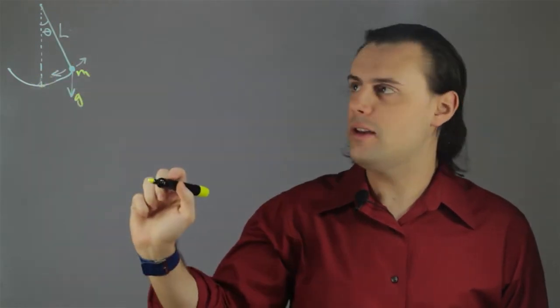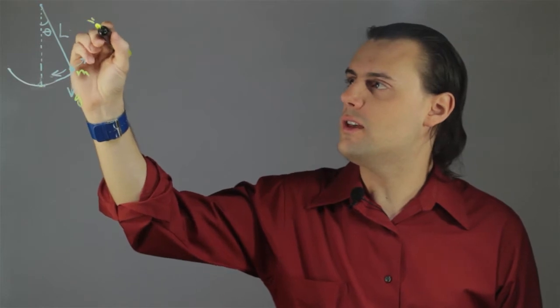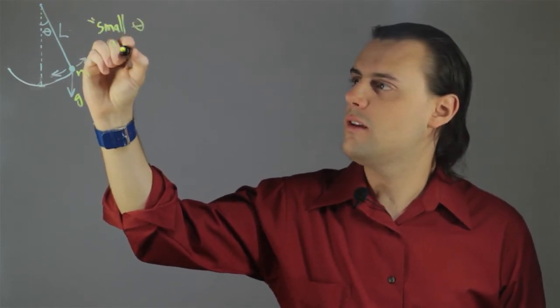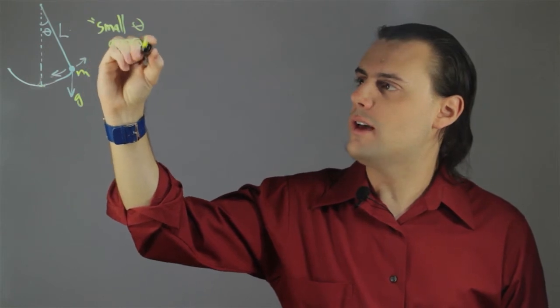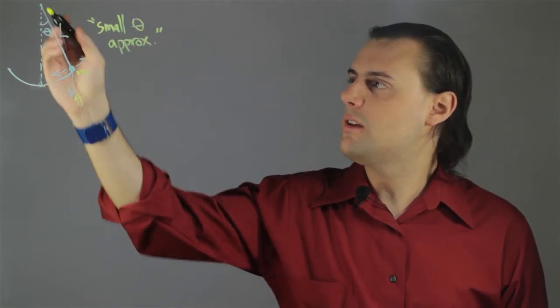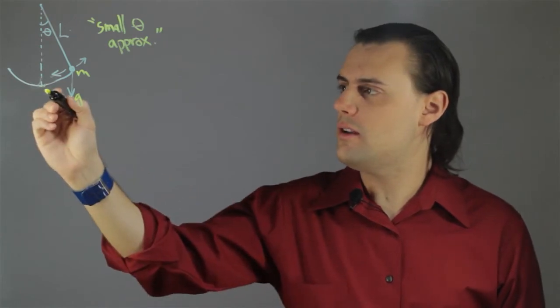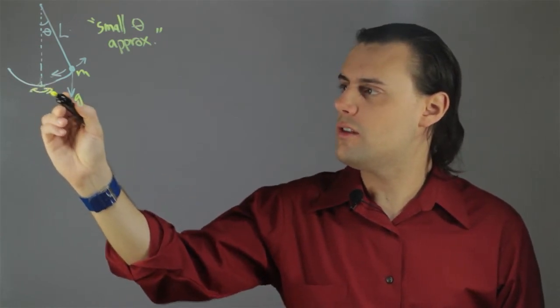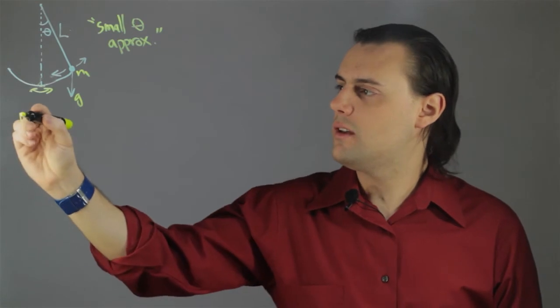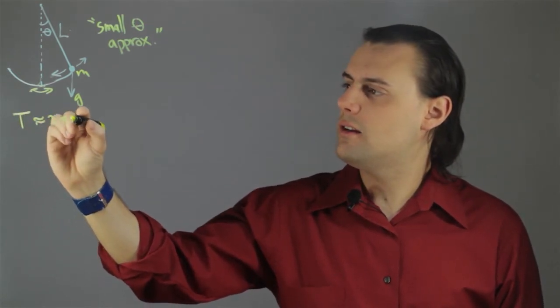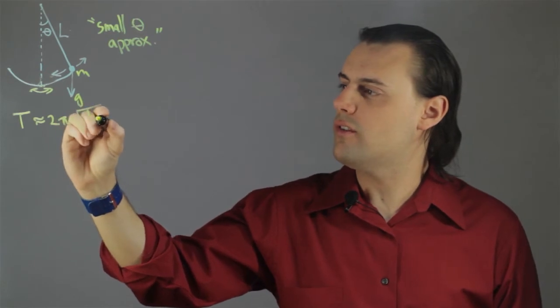Now typically we assume what's called the small angle approximation, and I'm just going to call that angle theta. And then under this approximation, the period of the oscillation T is approximately equal to 2π times the square root of L divided by g.